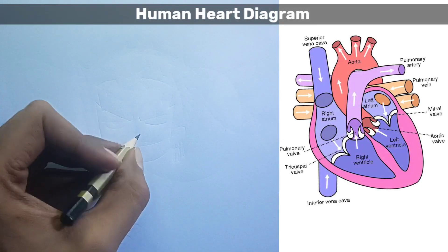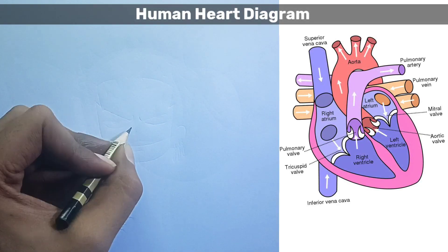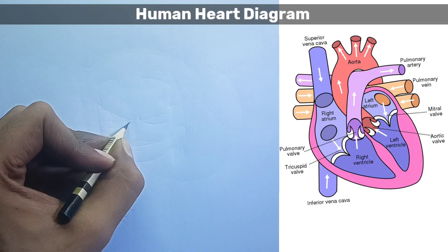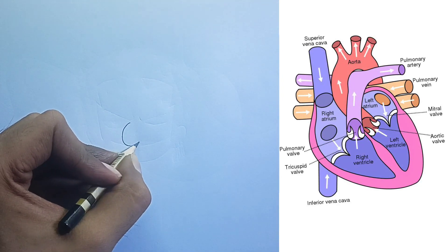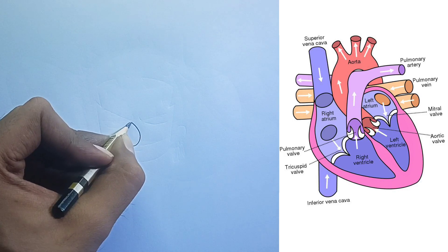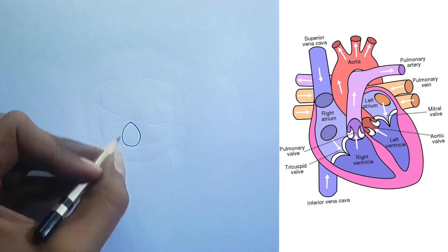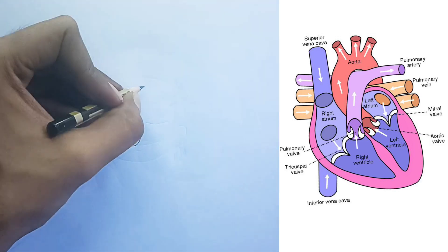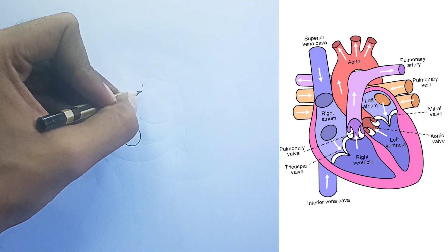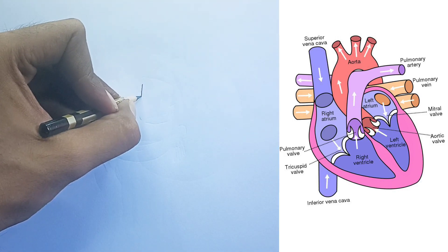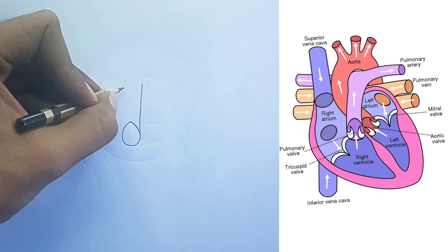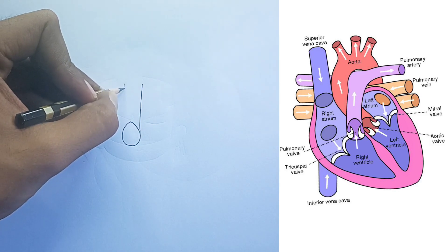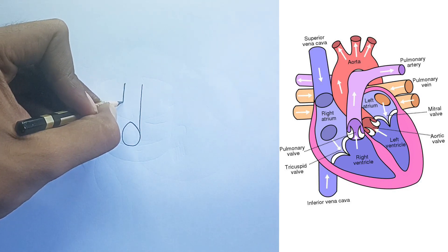This diagram illustrates a simplified cross-section of the human heart, showing its four chambers, major blood vessels, and valves, and indicating the direction of blood flow. Here is a detailed explanation.